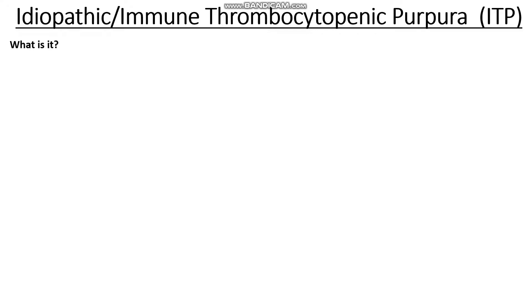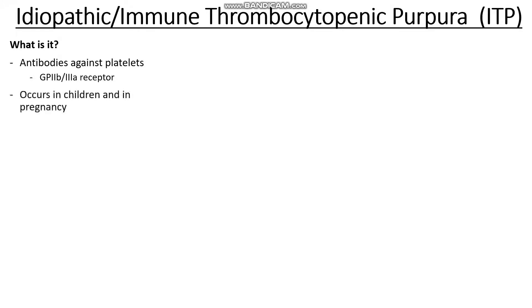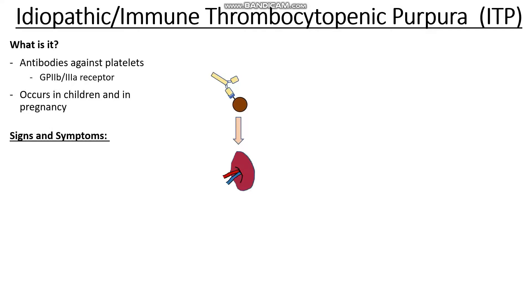It all starts with our platelets, and we have antibodies being formed against the platelets, specifically against our GP2B3A receptor. This mainly occurs in children and those who are pregnant. In immune thrombocytopenic purpura, the antibody-platelet complex is too large to pass through the spleen, and therefore it's broken down, leaving us with fewer platelets in our blood.